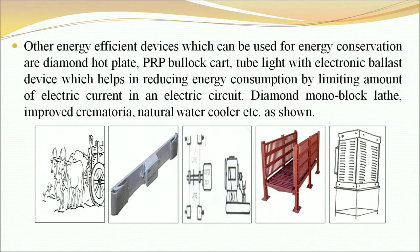Many energy efficient devices can be manufactured and many technologies can be used for energy conservation. In many industries, older and inefficient equipment has been replaced by new and efficient ones. Other energy efficient devices used for energy conservation include the diamond hot plate, PRB bullock cart, and tube lights with electronic ballast devices, which help in reducing energy consumption by limiting the amount of electric current in an electric circuit, diamond monoblock, improved crematoria, natural water cooler, etc., as shown in this figure.